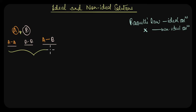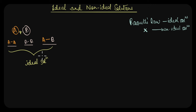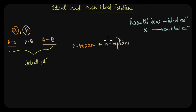A perfectly ideal solution is very rare indeed, but that does not mean we cannot achieve near-similar behavior. For example, a solution of N-hexane and N-heptane forms an almost ideal solution.